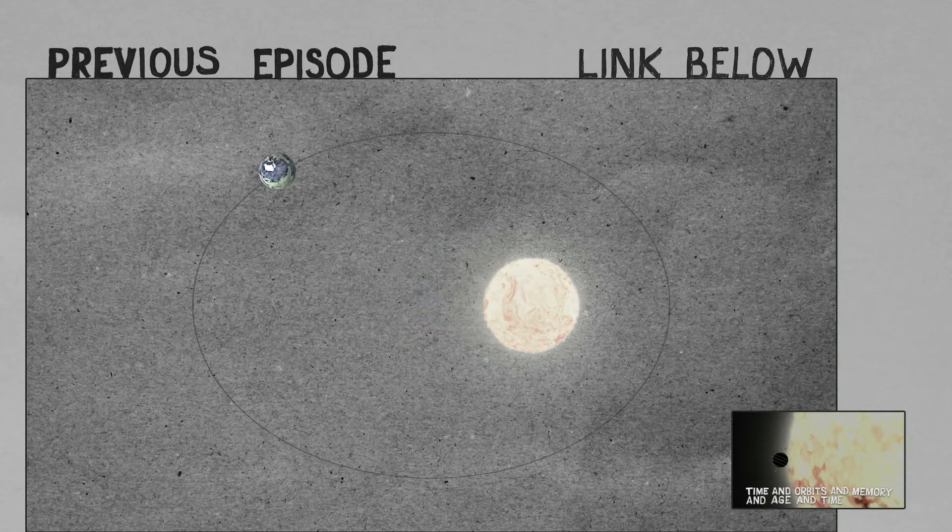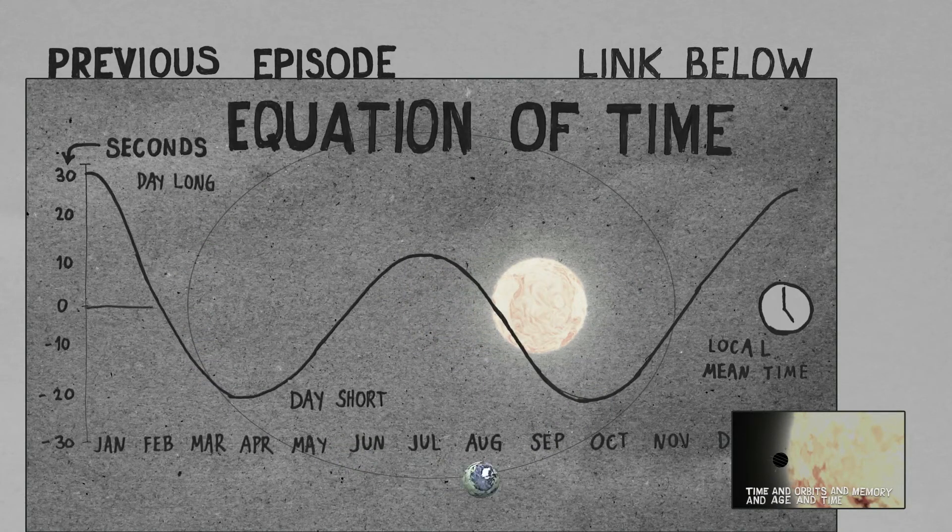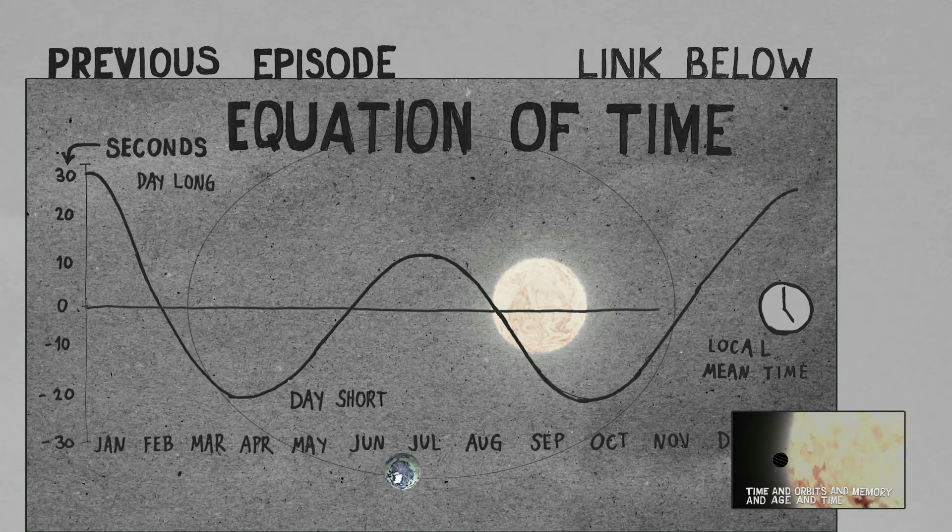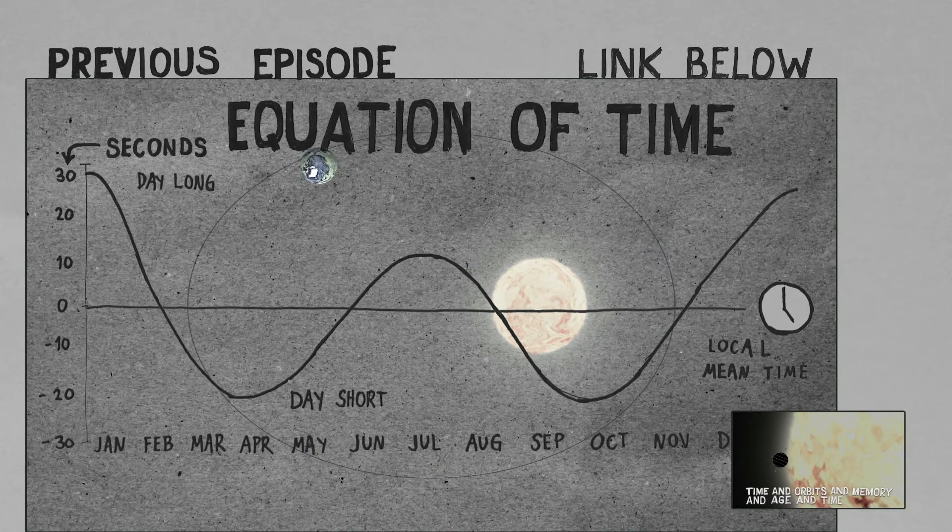As we saw in the other video, the Earth's orbit is elliptical, and this has created obstacles for timekeeping devices. Let's take it from the top. I mean, the beginning.